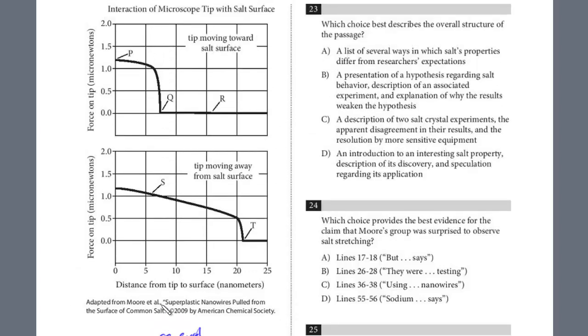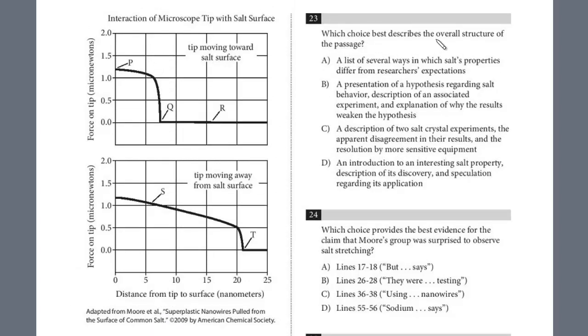Let's take a look at number 23. This is a general question too. The overall structure. Sometimes you see questions about the developmental pattern, the structure, how is it listed. Let's take a look at the answers. 'A list of several ways in which salt's properties differ from researchers' expectations.' This is partially true, but several ways. Is that what the whole structure of the passage is about? No.